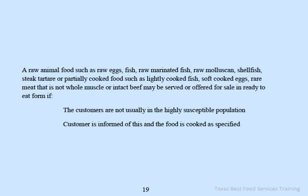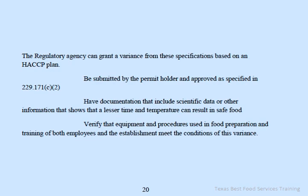Raw animal food — such as raw eggs, fish, raw marinated fish, raw molluscan shellfish, steak tartare — or partially cooked food such as lightly cooked fish, soft-cooked eggs, or rare meat that is not whole muscle intact beef, may be served in ready-to-eat form if customers are not in the highly susceptible population, the customer is informed, and the food is cooked as specified. The regulatory agency can grant a variance based on a HACCP plan submitted by the permit holder, supported by scientific data showing a lesser time and temperature can result in safe food, with documented equipment, procedures, and staff training.